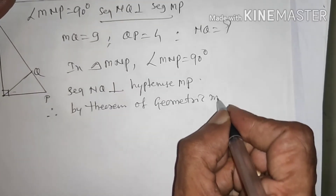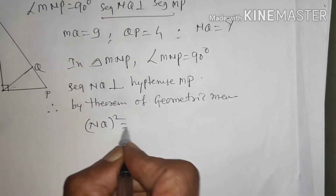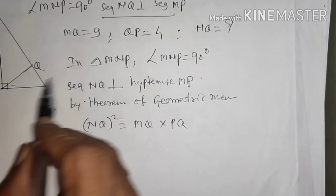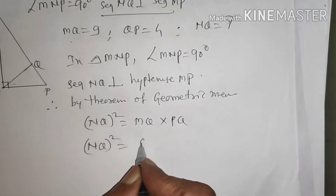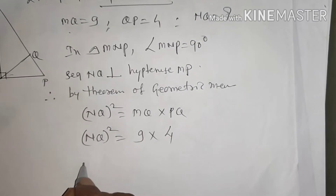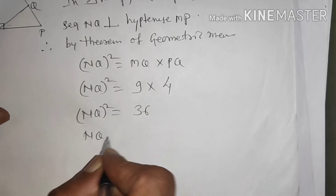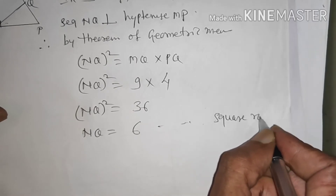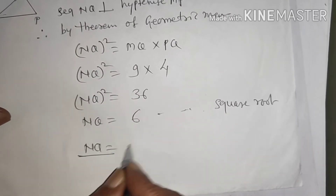By the geometric mean theorem: NQ² = MQ × QP = 9 × 4 = 36. Therefore, taking the square root, NQ = 6. So the answer is NQ = 6.